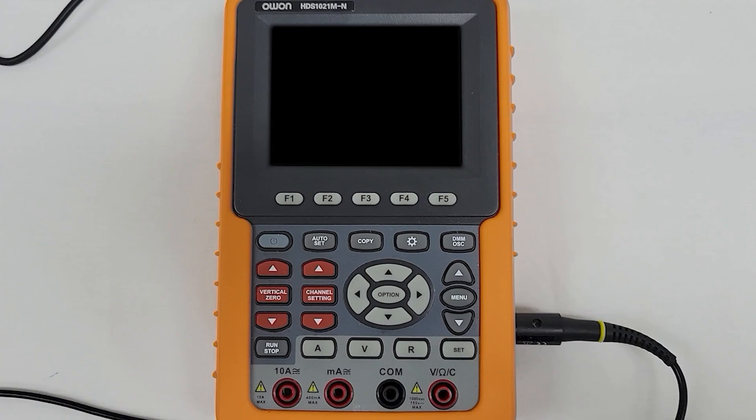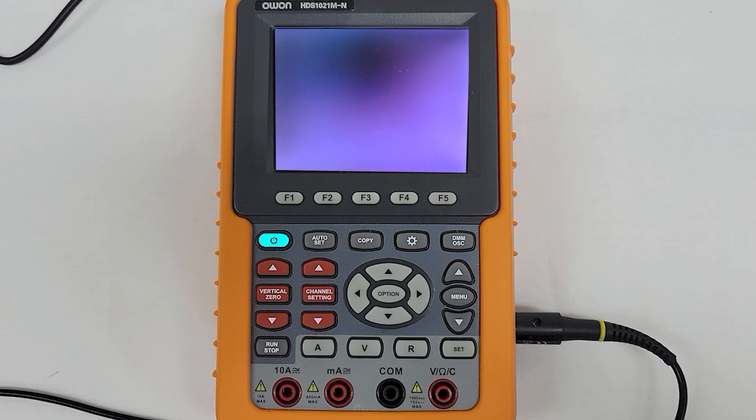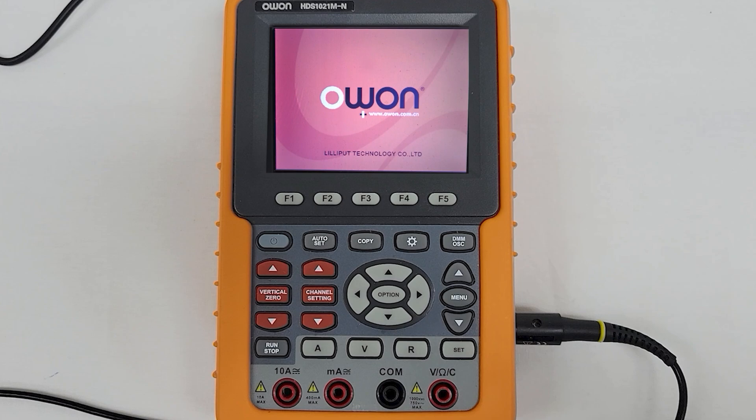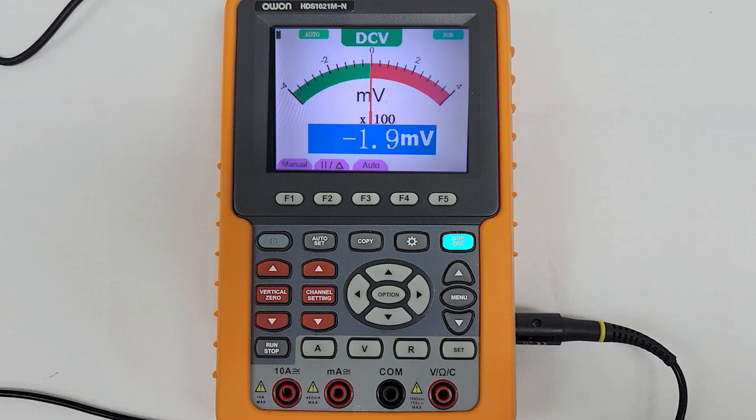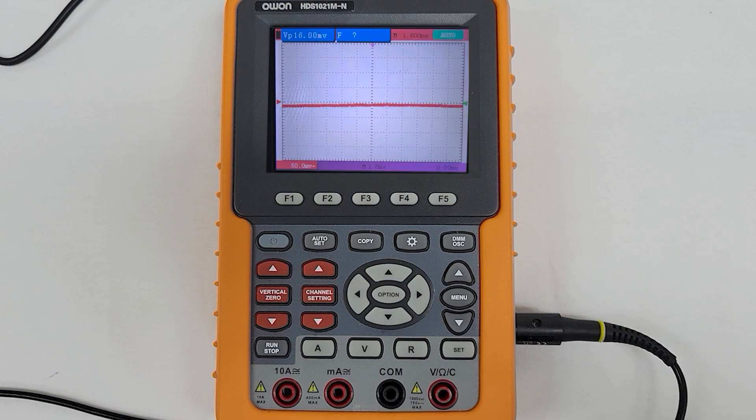To turn the Owen scope on you simply need to press the power button. Once it's done booting up, press any key to get past the title screen. When you first boot up the Owen scope it may start off in multimeter mode. Press DMM OSC to change it to oscilloscope mode.